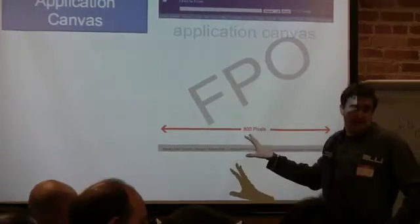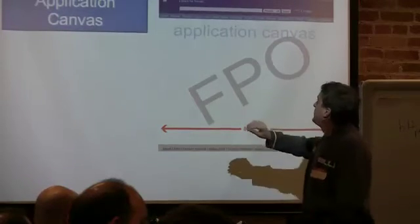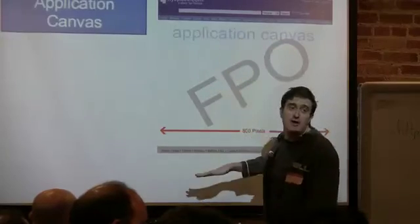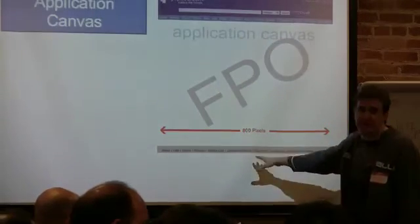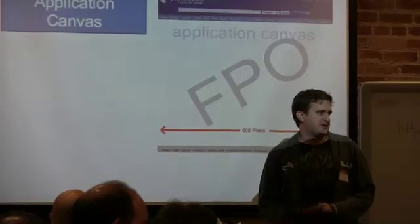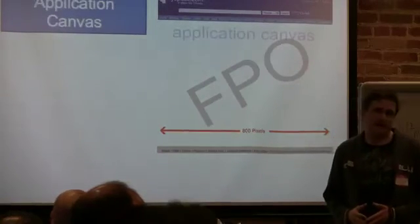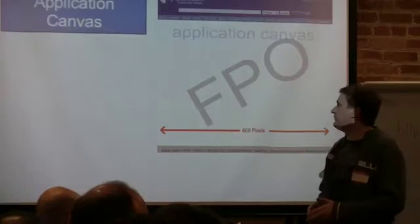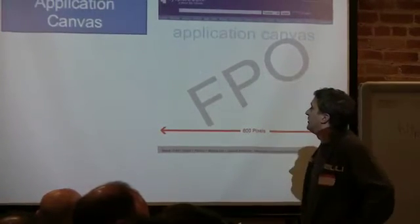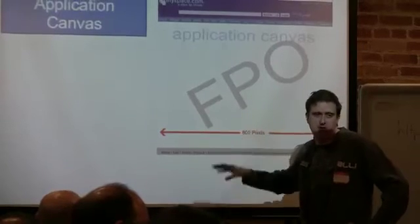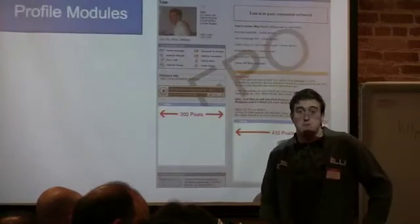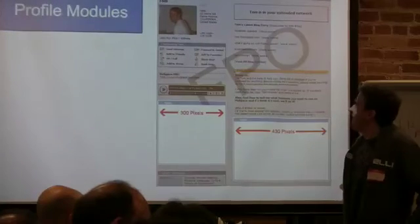The next key component is the Application Canvas. We have the standard MySpace header up top, and you get everything below that — the full width of the page, which is 800 pixels. It's a huge amount of real estate to build really engaging and exciting applications. We're hoping we can extend this model quite a bit, as this is a new page on MySpace.